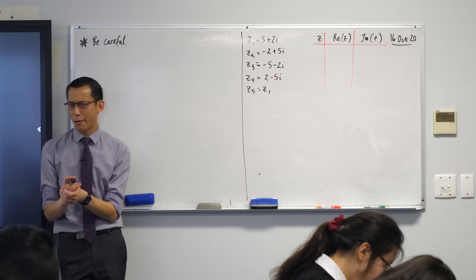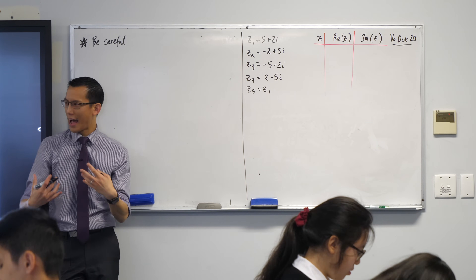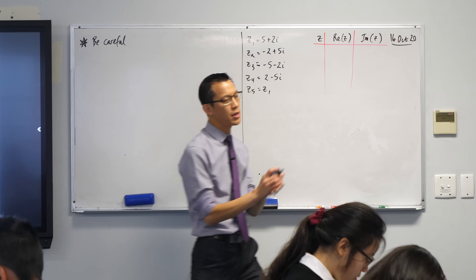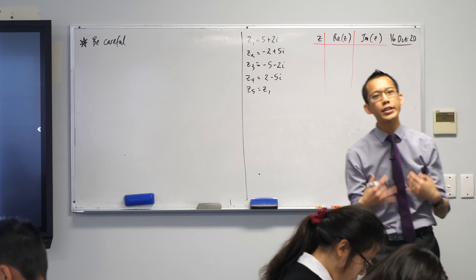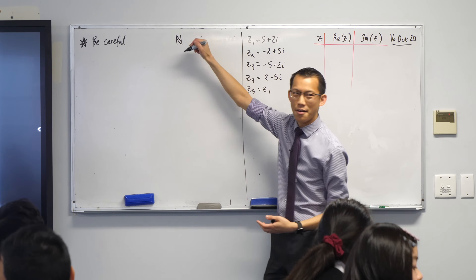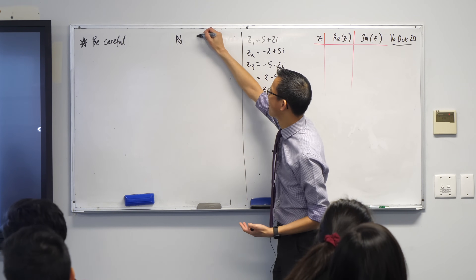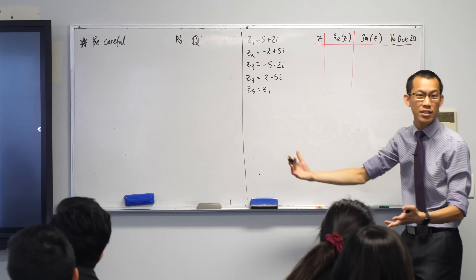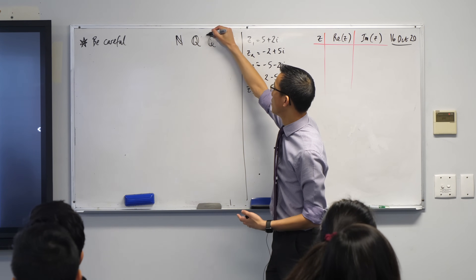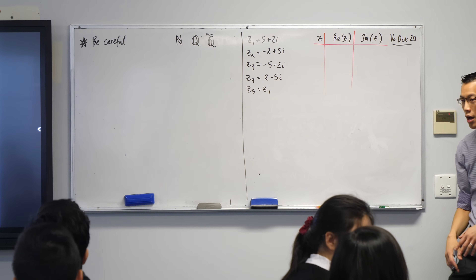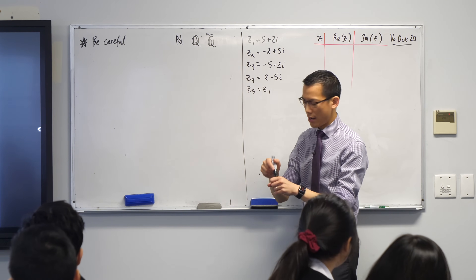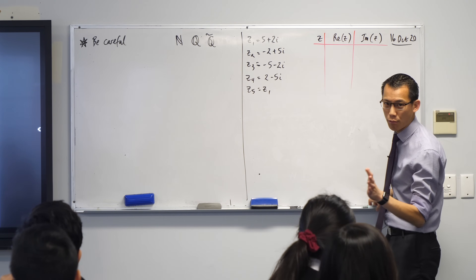We're dealing with new numbers that are really cool. I hope you're starting to get a feel for how they work and getting used to writing i's everywhere and watching for your double negatives. One of the things I want you to remember is that every time you've learned about a new set of numbers — moving from whole numbers to fractions, decimals, percentages, then irrational numbers — every time we progressed, we had to say: be careful, these new numbers don't behave like the old ones. You can jot this down — there are some very simple examples of this.